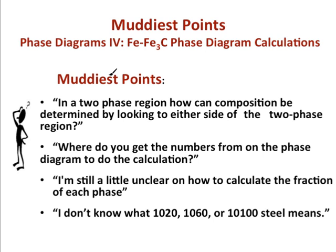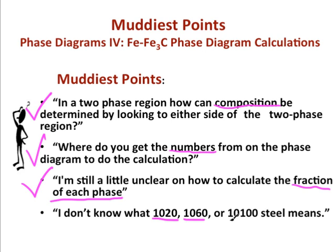This screencast has successfully addressed the muddiest points posed at the beginning. We have learned how composition can be determined by looking to either side of the two-phase region, where we get the numbers from to do the phase calculations, all about finding the fraction of each phase, and what the 1020, 1060, or 10100 steel designations mean. If you have any more questions, please leave them in the comment section. Thanks for watching, and I'll see you next time.